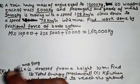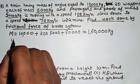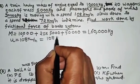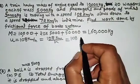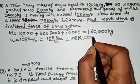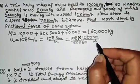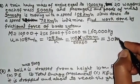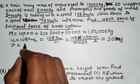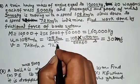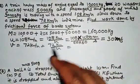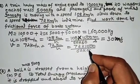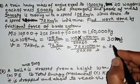I have a different idea. First, total mass = 10,000 + 20 × 5,000 + 50,000 = 160,000 kg. Initial velocity is 108 km/h. Converting: 108 × 1000 ÷ (60 × 60) = 30 m/s. Final velocity is 72 km/h, which converts to 20 m/s. Now using the work-energy theorem.